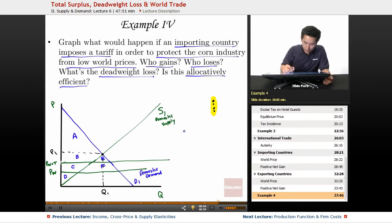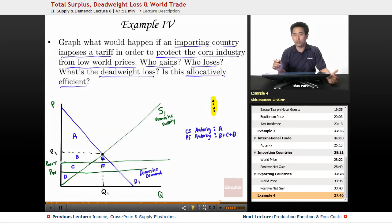So we'll take a look at three things here. The CS in autarky so there's no trade whatsoever. The CS is going to be A. The PS in autarky is going to be B plus C plus D. So that's the original situation, no trade whatsoever.